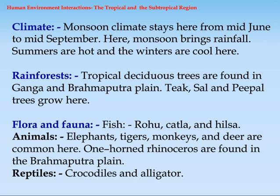Flora and Fauna. Fish: Rohu, Catla, and Hilsa. Animals: Elephants, Tigers, Monkeys, and Deer are common here. One-horned rhinoceros are found in the Brahmaputra Plain. Reptiles: Crocodiles and Alligators.